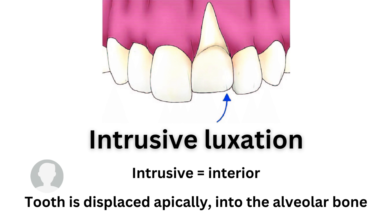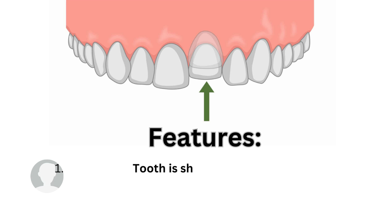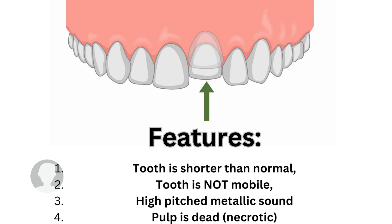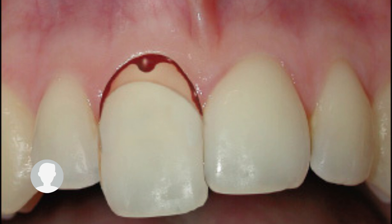The features for intrusive luxation are opposite to extrusive: the tooth appears shorter than normal. In addition, the tooth is not mobile, and there is a high-pitched metallic sound when you tap on the tooth — that is the characteristic feature of intrusive luxation. The pulp is also necrotic, so if you perform a cold test or vitality test, the tooth will not respond because the pulp is dead.